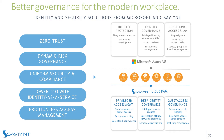With Access Request, Saviant has a frictionless, risk-mitigating access request system that leverages AI and machine learning to determine what the risk associated with the requested access really is.